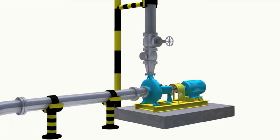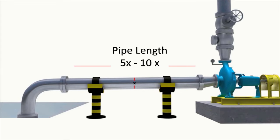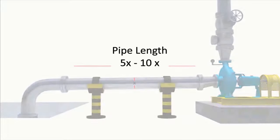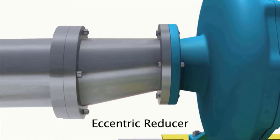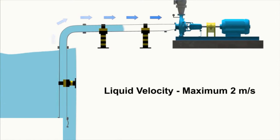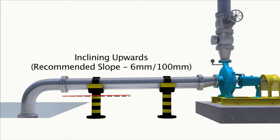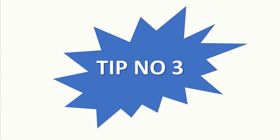Tip number two: follow good engineering practices for piping design. One recommendation is a minimum suction straight length of 10 times the suction flange diameter — but at least keep a straight length of five times the diameter to minimize recirculation. Have smoother transitions when you have reducers or elbows along the way. The rougher the path for the liquid, the higher the friction losses and turbulence, and the greater the chances for damaging cavitation.